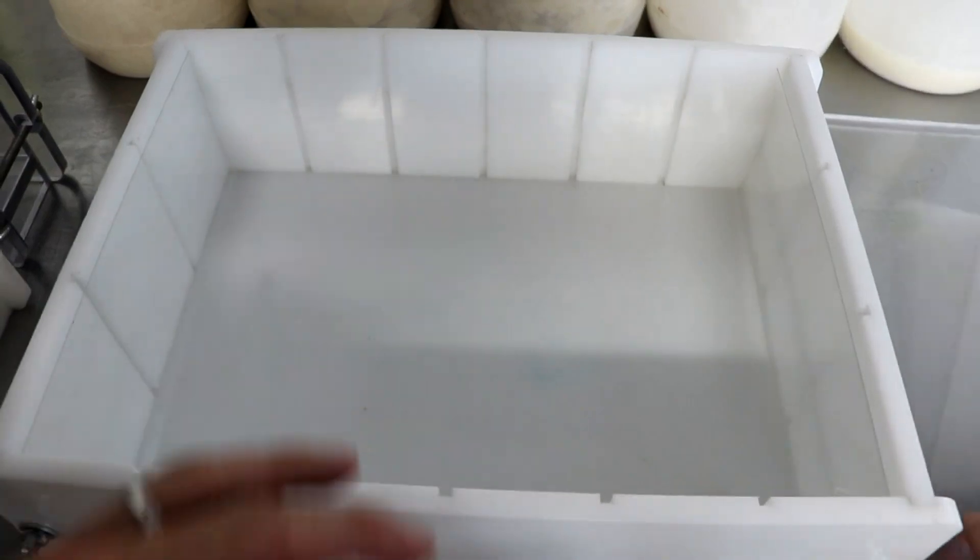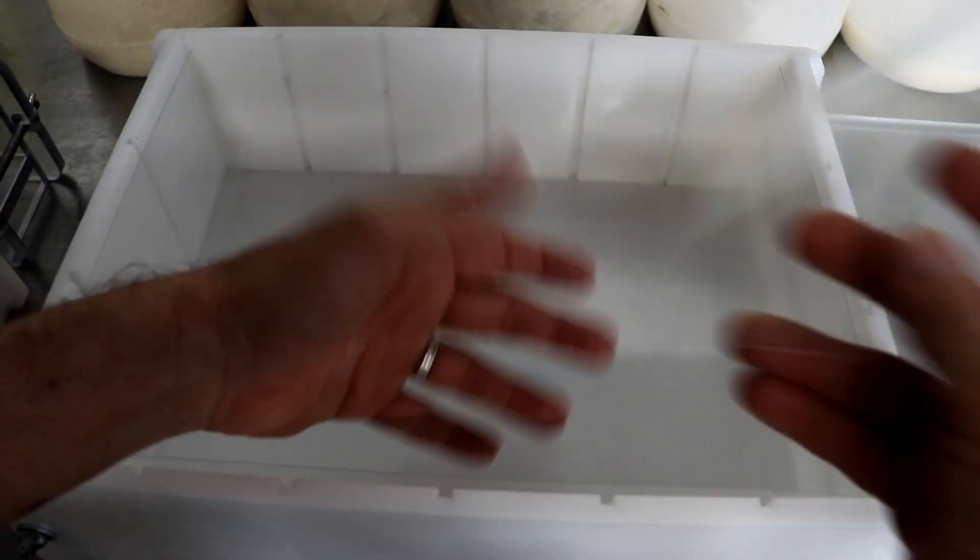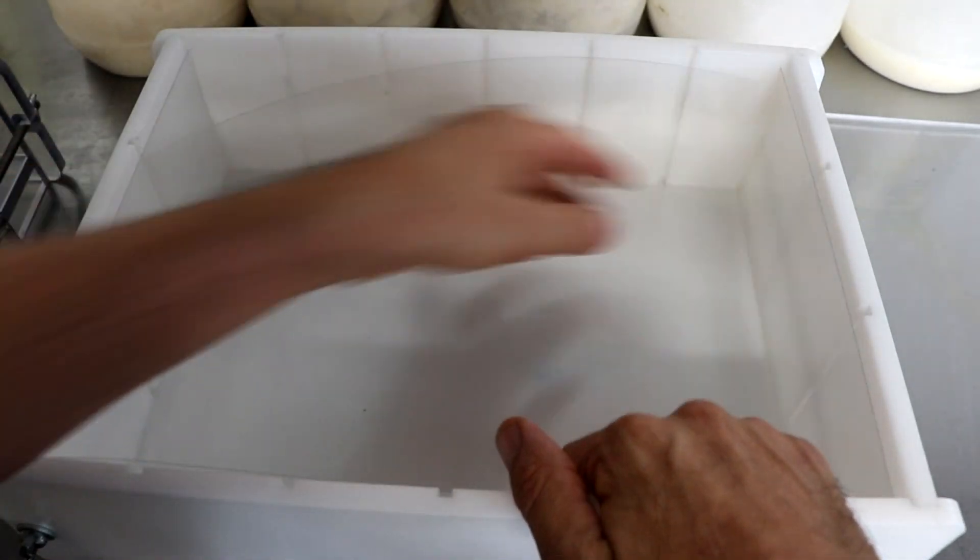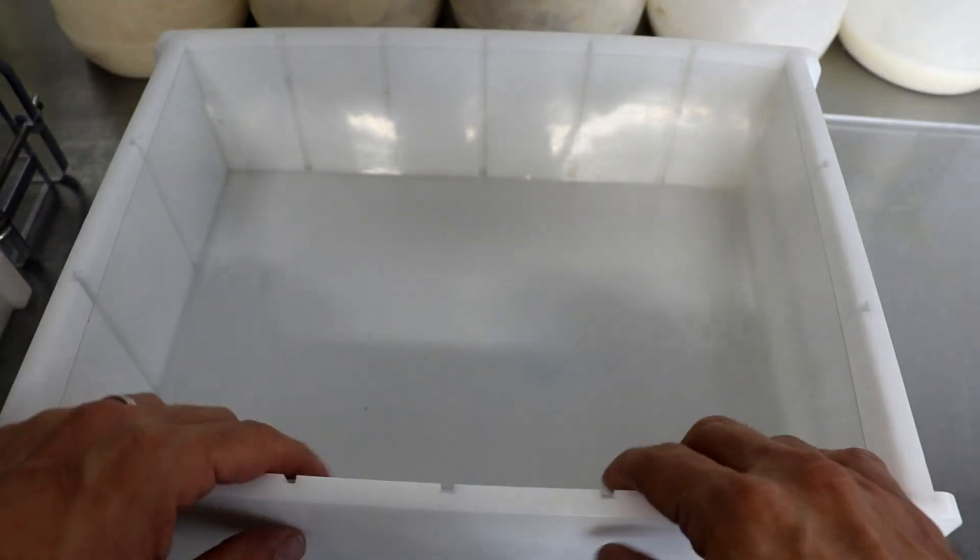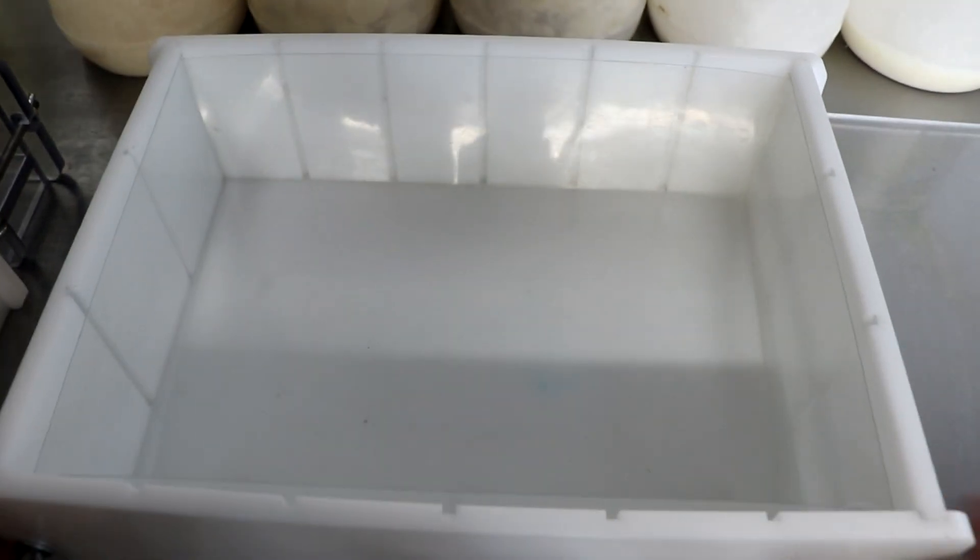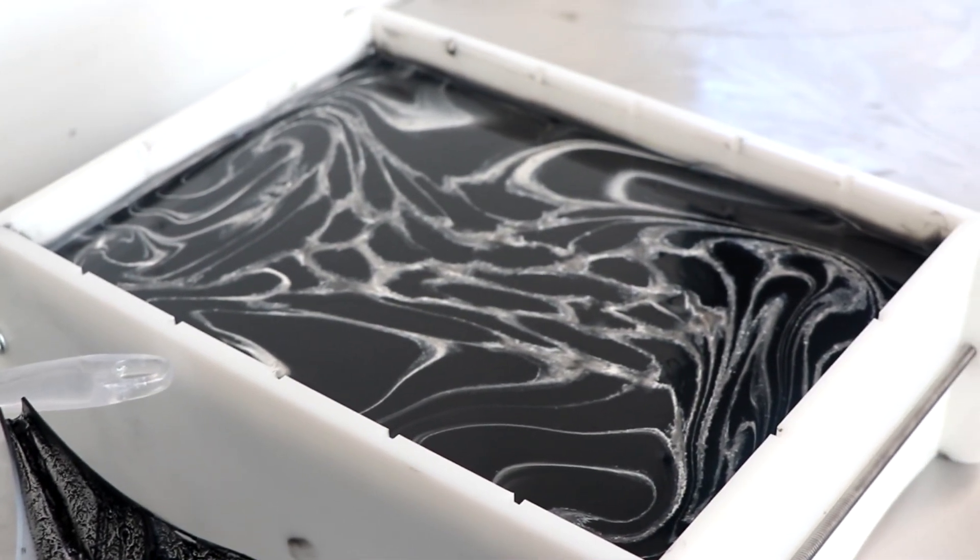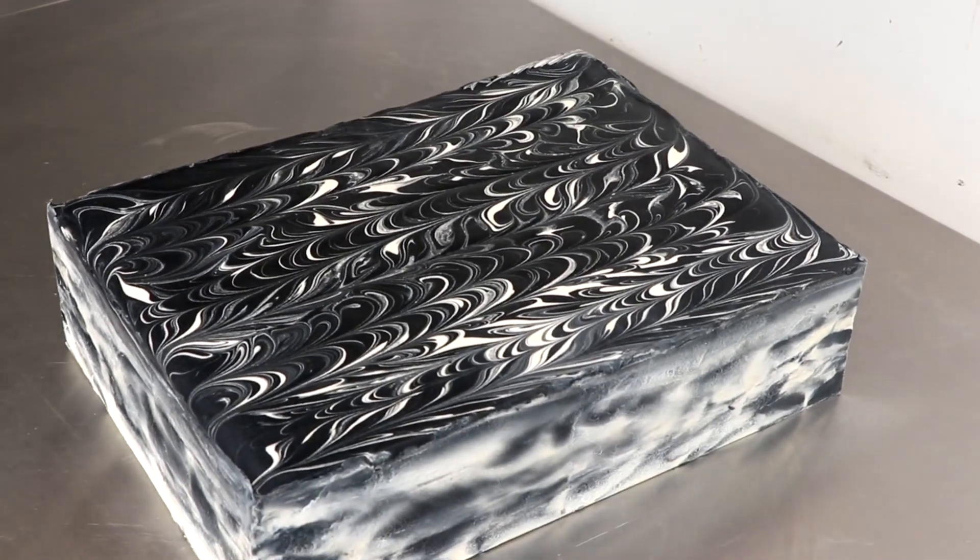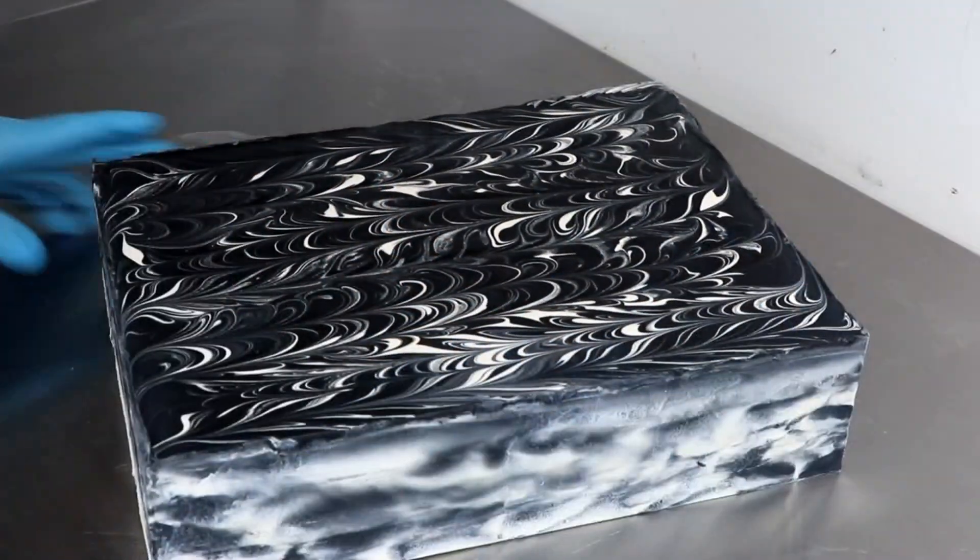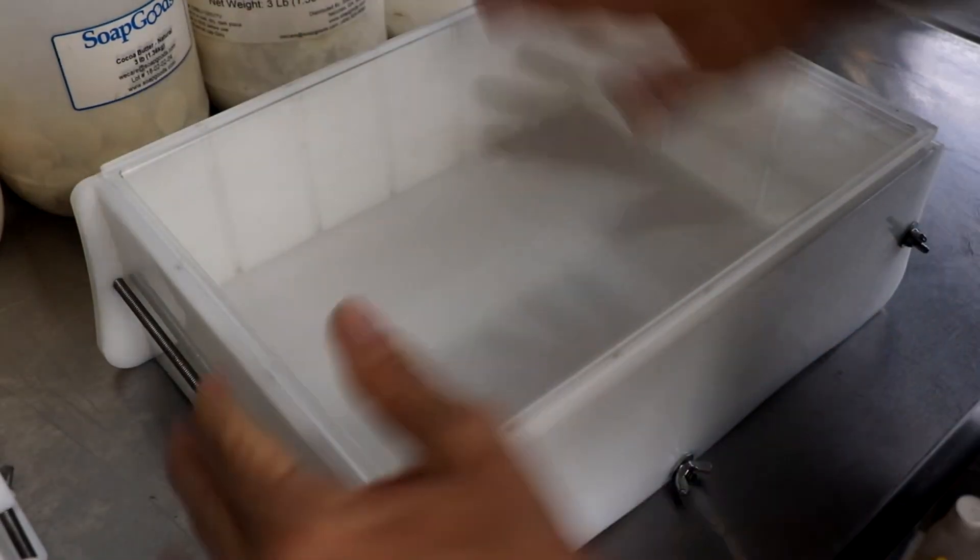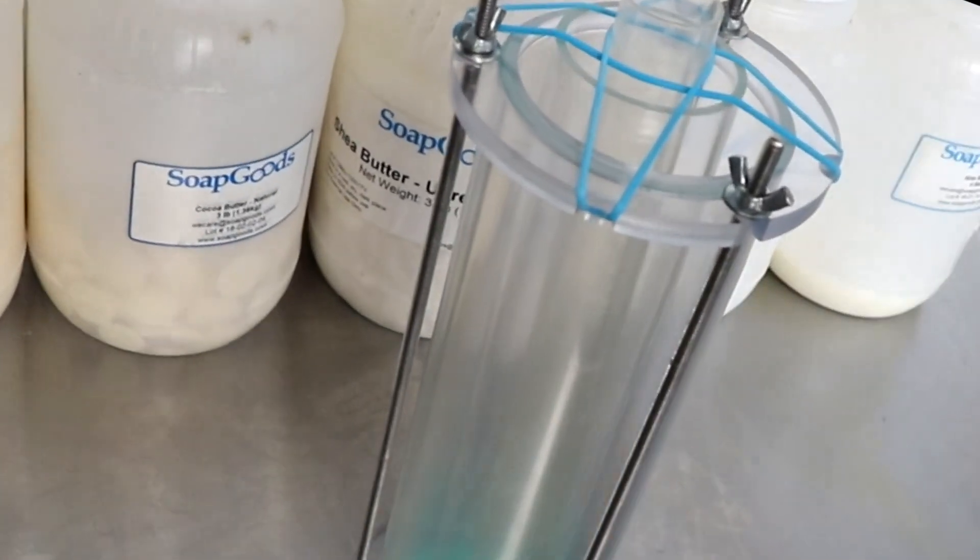And so what ended up happening is now that 18 bar soap mold turned into a mold that I can put about 10 pounds of batter in so that I can cut a bunch of loaves. I think I can get 59 one inch bars of soap out of this particular mold. And that's kind of what it looked like. So what I did here was this like dancing funnel combination. Anyway, I'll post a video on that later. But you get the idea. This I also got the top for.